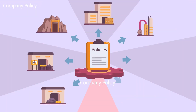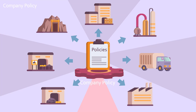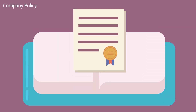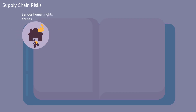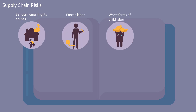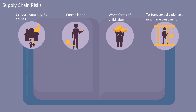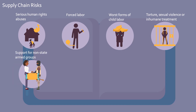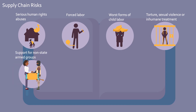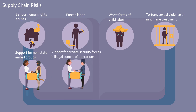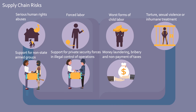First, adopt a company policy publicly committing your company to addressing, at a minimum, all of the major supply chain risks from the sample policy included in the Guidance: serious human rights abuses, forced labor, worst forms of child labor, torture, sexual violence or inhumane treatment, support for non-state armed groups, support for private security forces in illegal control of operations, money laundering, bribery and non-payment of taxes, and crimes against humanity.